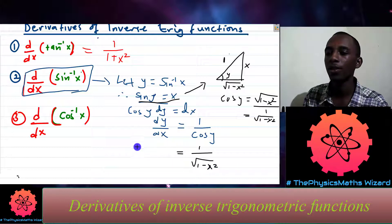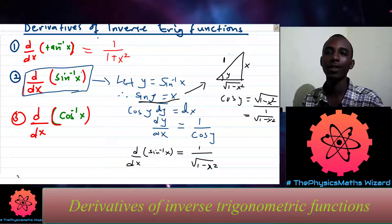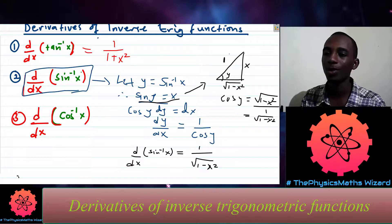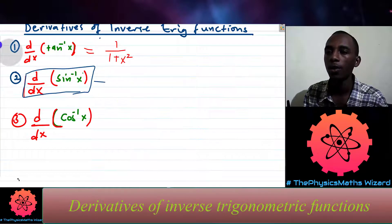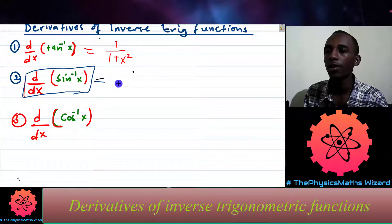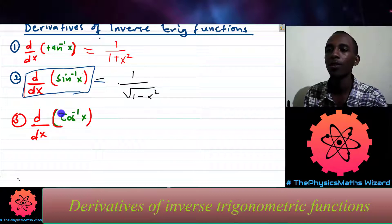So that is the derivative of arcsin of x. Our final answer here is 1 divided by the square root of 1 minus x squared.